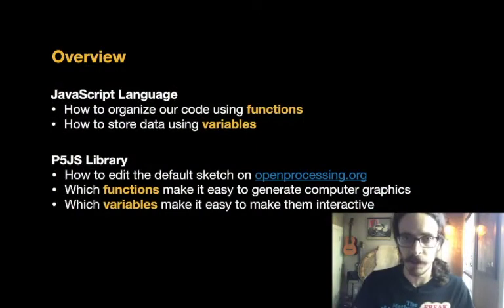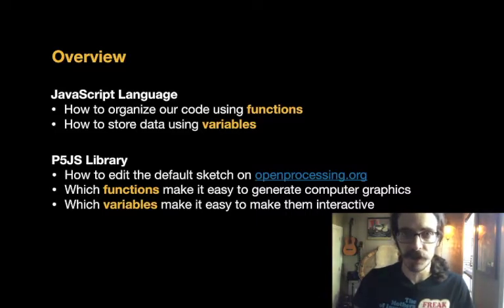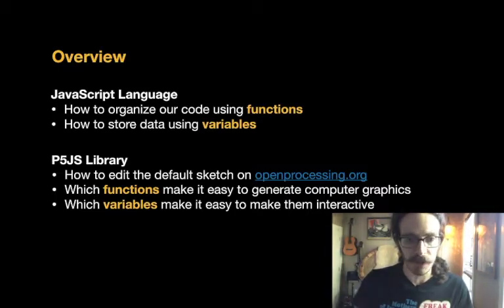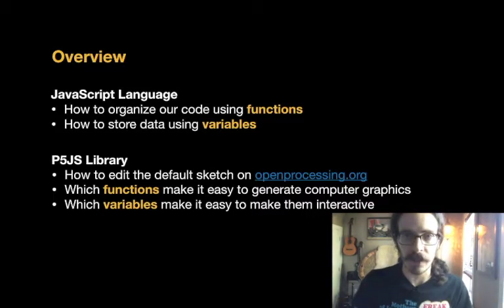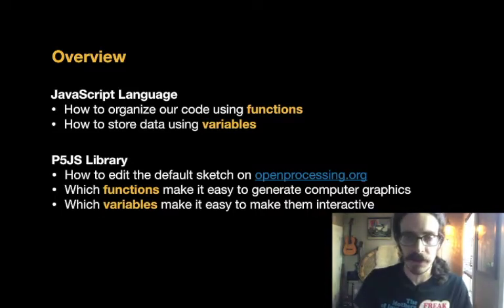Welcome back. In this video we're going to continue looking at the JavaScript language and the p5.js library, and we're going to start actually editing some code. We're going to look at foundational programming concepts and how they're used in JavaScript — how to organize our code using functions, which help us manage abstraction, and how to store our data using variables. Then we'll look at the p5.js library, how to edit the default sketch on openprocessing.org, and functions and variables built into p5.js for generating interactive computer graphics.